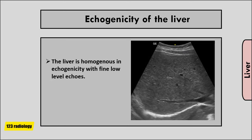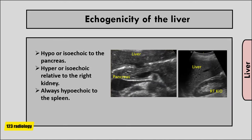The liver is homogenous in echogenicity and has fine low-level echoes. When talking about echogenicity of a structure, we are talking about it relative to other adjacent structures. When compared to the pancreas, the liver is hypoechoic or isoechoic. It is hyperechoic or isoechoic relative to the right kidney, and it is always hypoechoic to the spleen.